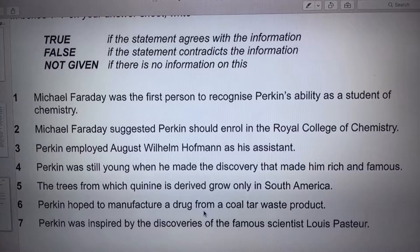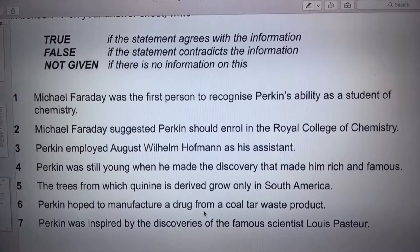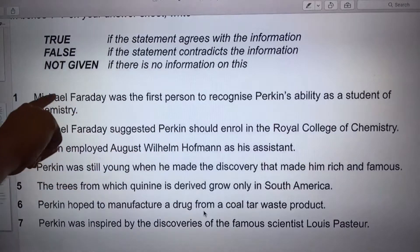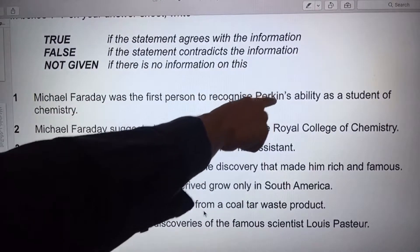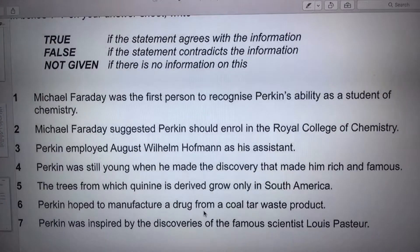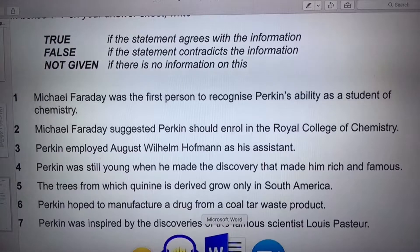So guys, what are we looking for in these questions? If we look at number one — Michael Faraday — that's a proper noun. We have to look for where it is mentioned first. Where is Michael Faraday mentioned first? Next keyword: first person recognized Perkins — another proper noun — ability, student chemistry. You're going to underline this: Michael Faraday, first person, Perkins, ability, student chemistry. Done.